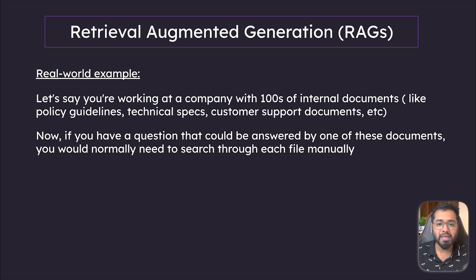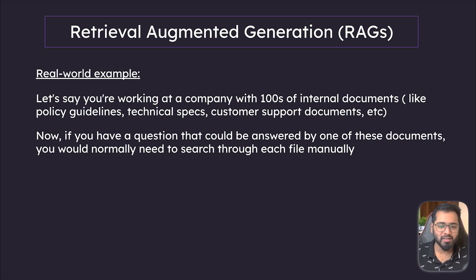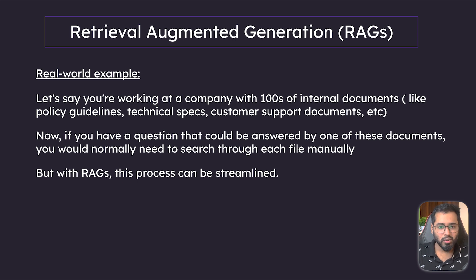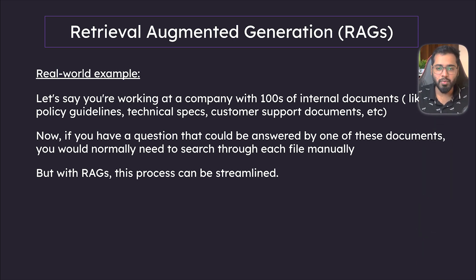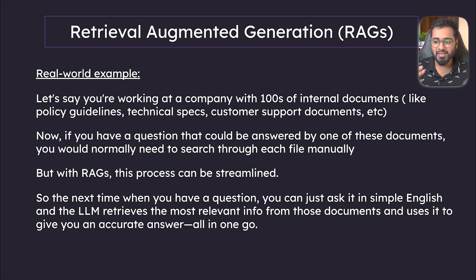Now let's say you have a question that could be answered by any one of these documents. What you would normally do without AI is comb through each and every single document trying to find your answer, or just ask a colleague. But with AI and with RAGs especially, we can really streamline this entire process. Instead of going through all the files manually, we make all of this private data available to the LLM — we give this external source of information to the LLM. So the next time you have a question, you can ask it in plain English, and now that the LLM has access to all your private information, it can comb through all your data and give you a very informed, accurate answer. That is the power of RAGs.